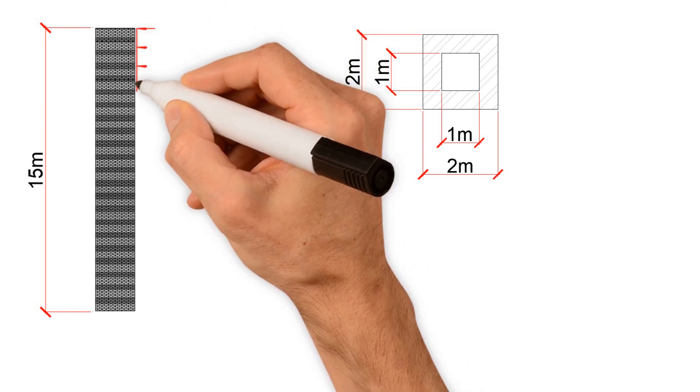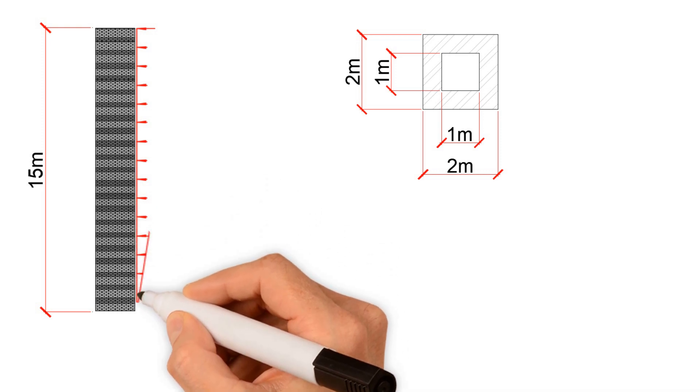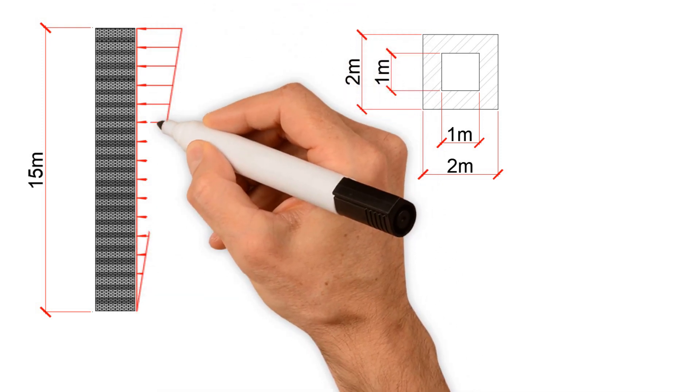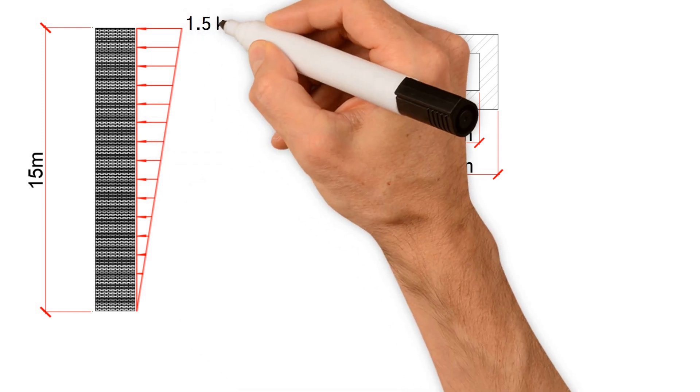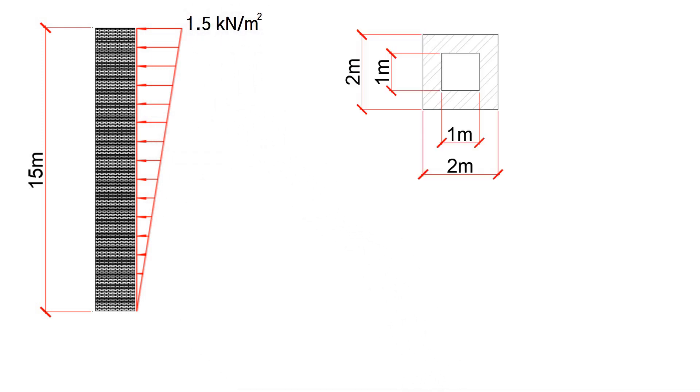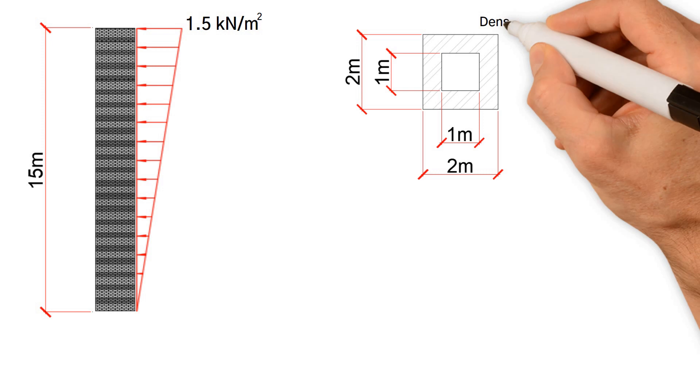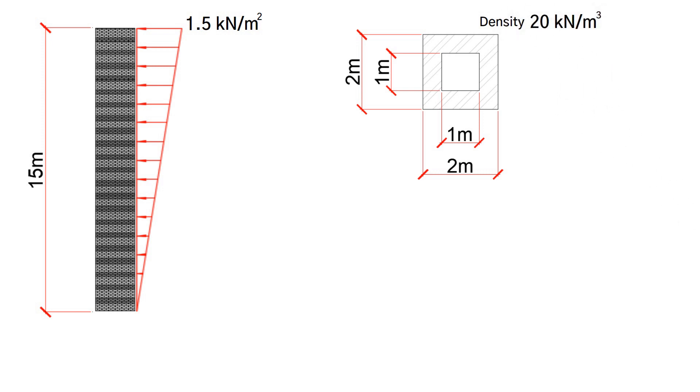The chimney is subjected to wind load acting perpendicular to one face. Wind pressure rises linearly from zero at the bottom to 1.5 kilonewtons per meter squared at the top. The brickwork has a density of 20 kilonewtons per meter cubed.